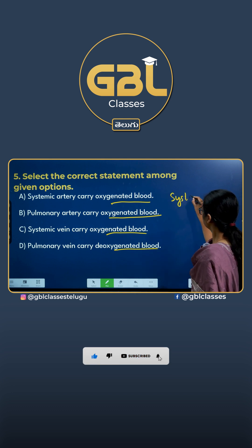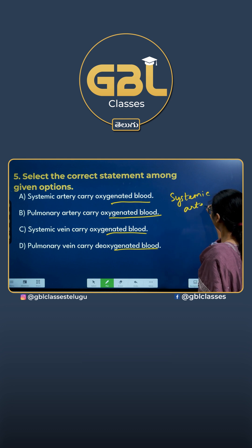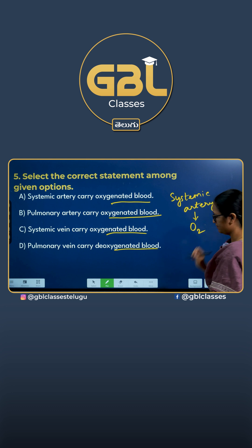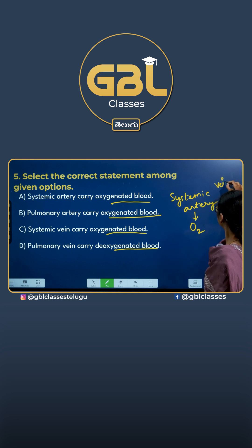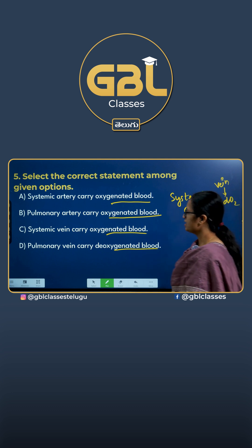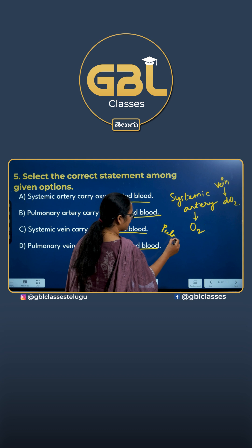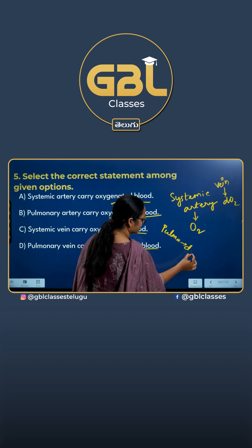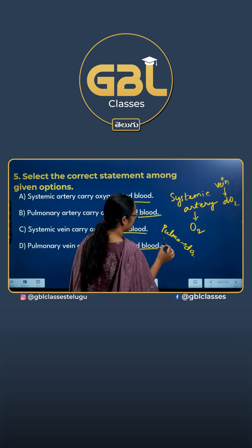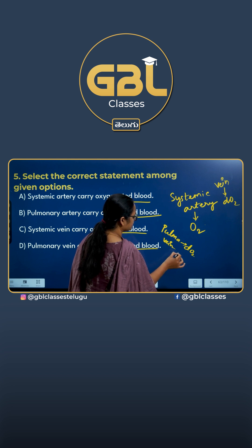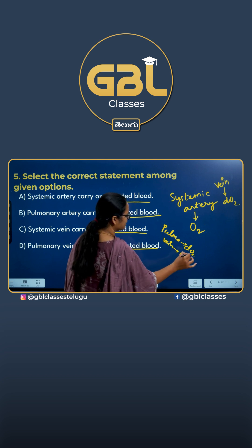Basically, systemic artery carries oxygenated blood, whereas systemic vein carries deoxygenated blood. Pulmonary artery carries deoxygenated blood, whereas pulmonary vein carries oxygenated blood.